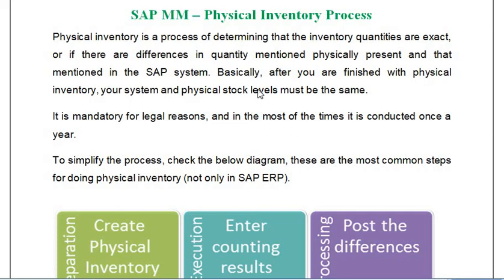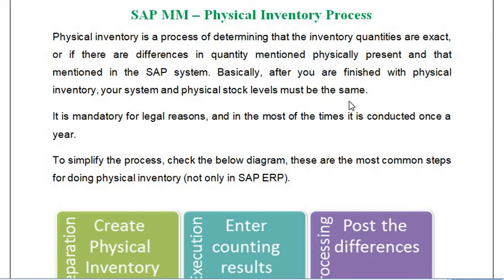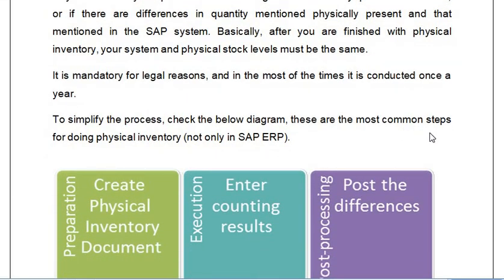Hello all, welcome. In this video session today we are going to discuss a very important topic: how to do the physical inventory process in SAP. This is an annual activity — each storage location in charge of the plant should execute this activity for a physical inventory verification process. Physical inventory is a process of determining that the inventory quantities are exact, or if there are differences in the quantity physically present versus what is mentioned in the SAP system.